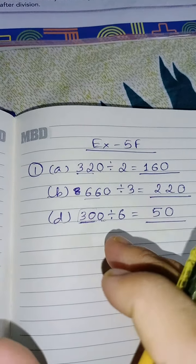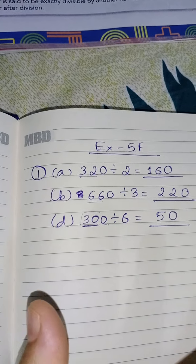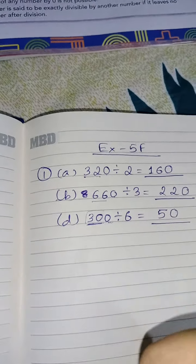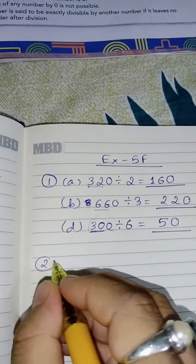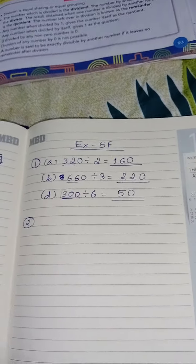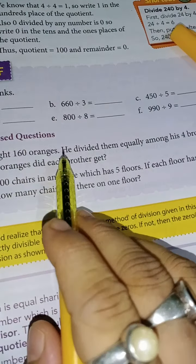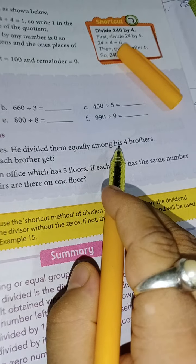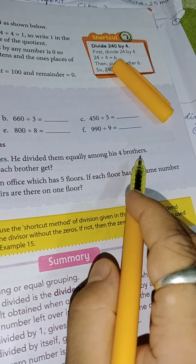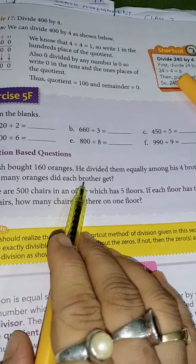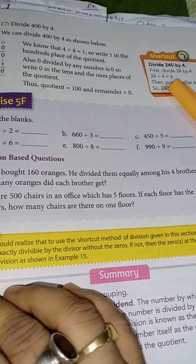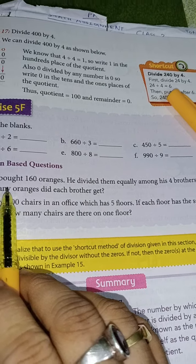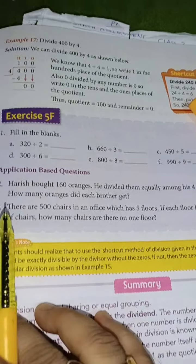So I have shown three of them. I hope you can solve the remaining questions from question number 1. Now question number 2 and 3 are application based questions. So let us see what are the questions. Harish bought 160 oranges. He divided them equally among his 4 brothers. How many oranges did each brother get?